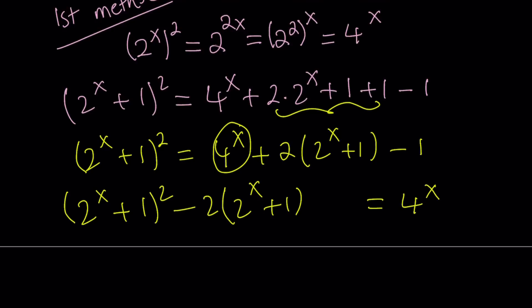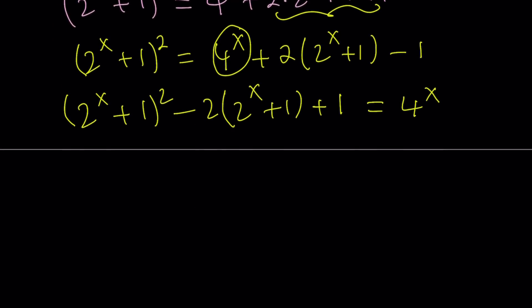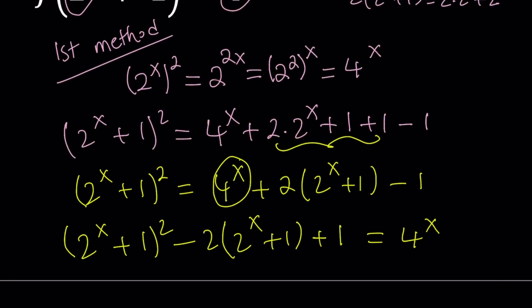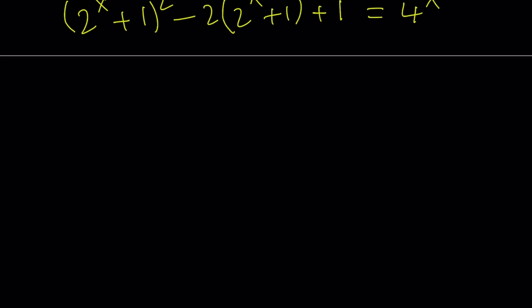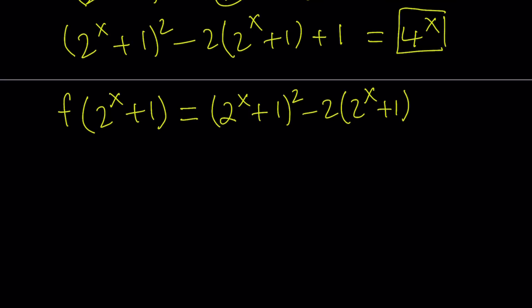So we get: 2 to the power x plus 1, quantity squared, minus 2 times 2 to the power x plus 1, plus 1, equals 4 to the power x. This is good because we have 4 to the power x on the right-hand side and 2 to the power x plus 1 inside the parentheses on the left. We can now replace 4 to the power x with this expression in the original equation, giving us f of 2 to the power x plus 1 equals 2 to the power x plus 1 quantity squared minus 2 times 2 to the power x plus 1 plus 1.